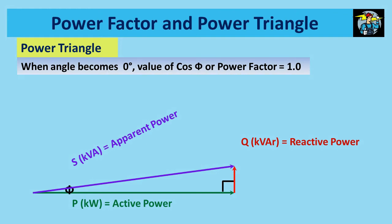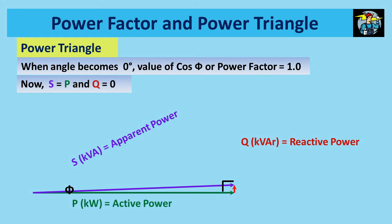When angle phi is at 0 degrees, value of cos phi or power factor reaches the value of 1. Although I have drawn the apparent power line with a gap to show it to you, it is right on top of the active power line now. Further, apparent power line has the same length as of the active power line. It means apparent power S equals active power P, and is when the reactive power value Q drops to the zero level.